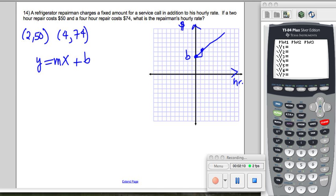We're going to find the slope. That's his hourly rate, and actually that's all they want us to find. So that would be 74 minus 50 over 4 minus 2. That's 24 over 2, so that's 12. His hourly rate is $12 per hour. That's his hourly rate.